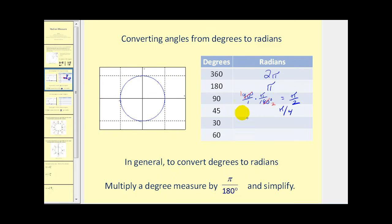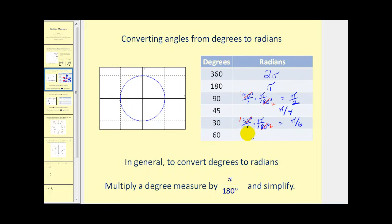Let's show 30 degrees as well: 30 degrees over one times pi over 180 degrees, and simplifying gives us pi over six radians. This is important because many angles we encounter will be multiples of 30 degrees and therefore multiples of pi over six. 60 degrees is two times 30 degrees, so we take pi over six and multiply by two to get two pi over six, which simplifies to pi over three radians.